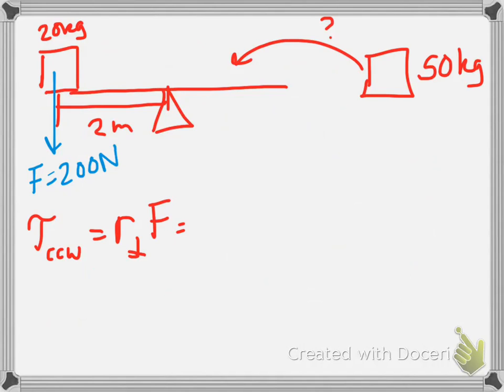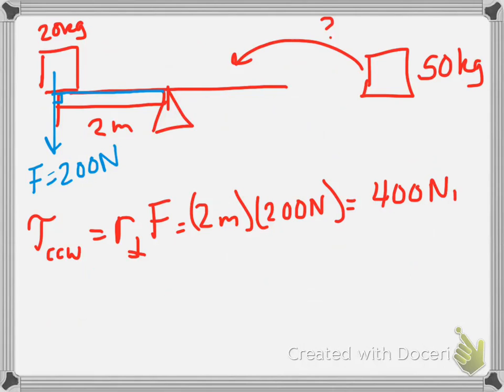And what is our R perpendicular? Well, there is the perpendicular distance in between the axis of rotation and our force. So that means it has to be 2 meters. So we have 2 meters multiplied by 200 newtons, which gives us a torque of 400 newton meters.